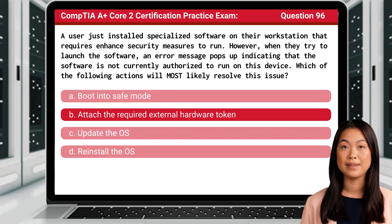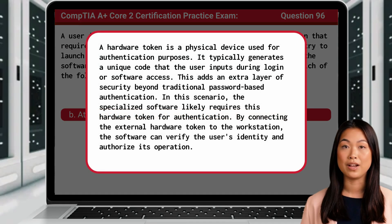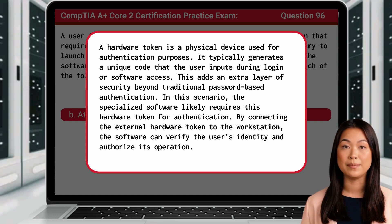The answer is B: Attach the required external hardware token. A hardware token is a physical device used for authentication purposes. It typically generates a unique code that the user inputs during login or software access, adding an extra layer of security beyond traditional password-based authentication. In this scenario, the specialized software likely requires this hardware token for authentication. By connecting the external hardware token to the workstation, the software can verify the user's identity and authorize its operation.